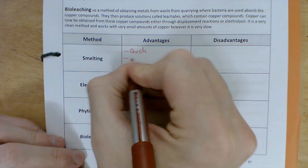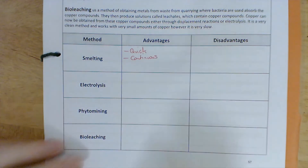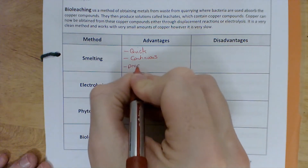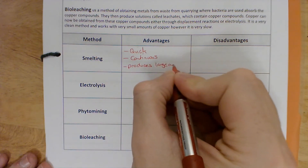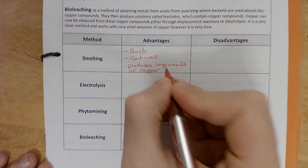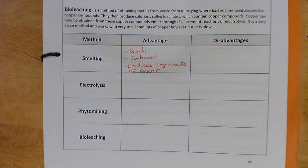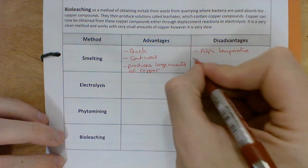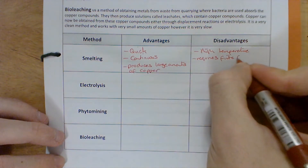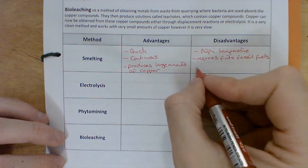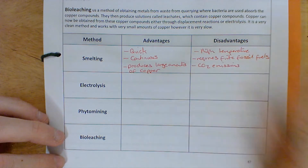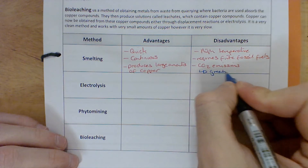Smelting: it's a very quick process, and it's a continuous process — as long as you keep putting in more raw materials, it will keep producing copper without stopping and starting. It produces large amounts of copper. The disadvantages, however: it requires very high temperatures, which requires finite fossil fuels, causing large CO2 emissions. We need to consider the greenhouse effect and global warming.